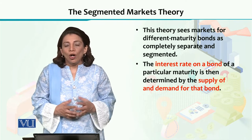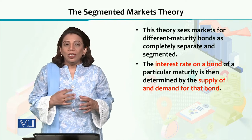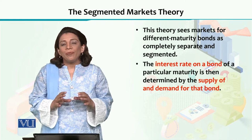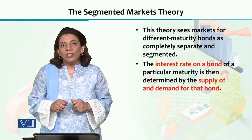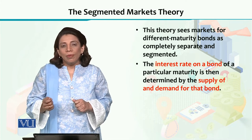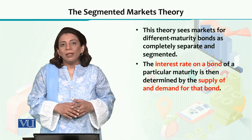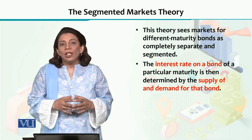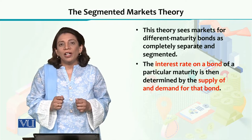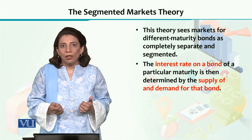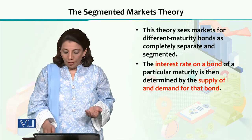Their markets are completely different, and they are not substitutes. That is the basic difference. In contrast to expectations theory — where the yield or rate of interest on long-term bonds is matched with the average of short-term bonds — in segmented markets theory, the yield or rate of interest of any financial instrument, whether short-term or long-term, is determined purely on the basis of its own demand and supply.